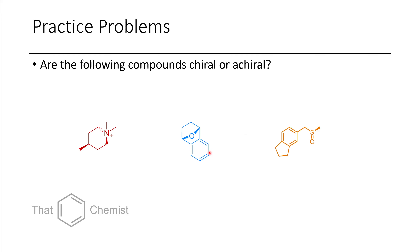A good practice problem for this set of questions would be to look at these three molecules. This might be easier with a model kit, but you can also just manipulate them in your mind's eye. See if each molecule is an enantiomer of another compound, if its enantiomer would be the same compound (a meso compound), or if it's achiral altogether. Here we have a quaternary ammonium, a cyclohexane derivative, and a sulfoxide.